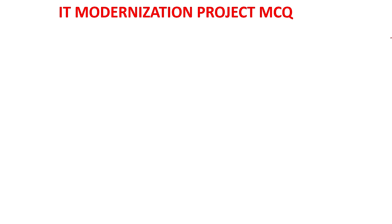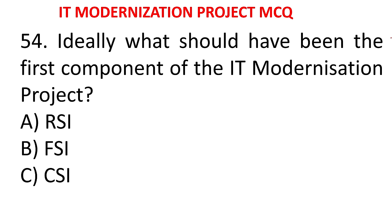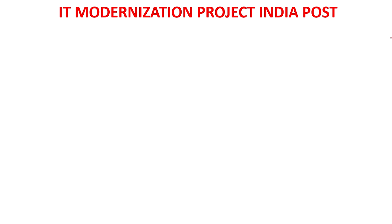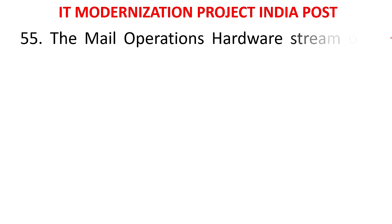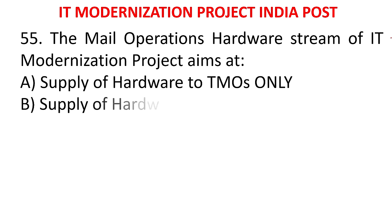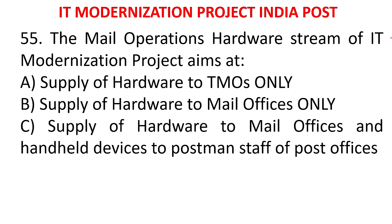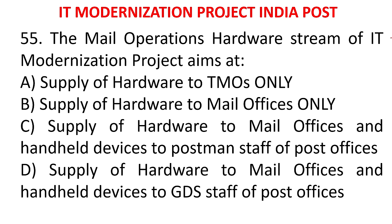MCQ 52: Ideally, what should have been the first component of the IT modernization project? RSI, FSI, CSI, or MOH. The answer is CSI. CSI should ideally have been the first component; however, the first component that was actually implemented is the data center facility. MCQ 53: The mail operations hardware stream of IT modernization project aims at - A) supply of hardware to TMOs only, B) supply of hardware to mail offices only, C) supply of hardware to mail offices and handheld devices to postmen and staff of post offices, D) supply of hardware to mail offices and handheld devices to GDS staff.